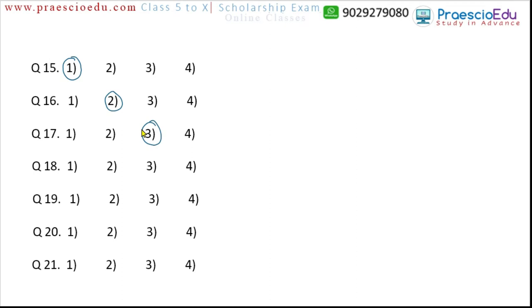Question 18: camel, cat, deer, and eagle. Eagle is a bird, so it is the different one from the others which are animals. Question 19: Rajasthan Gangarpur, Maharashtra Patne, Madhya Pradesh Bhimbetka, and Gujarat Langhnaj. All of Maharashtra Patne, Madhya Pradesh Bhimbetka, and Gujarat Langhnaj are Mesolithic age sites, but Rajasthan Gangarpur is not. So option one is the correct answer.